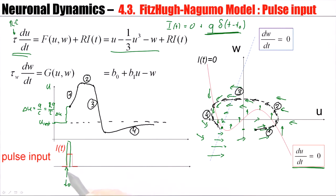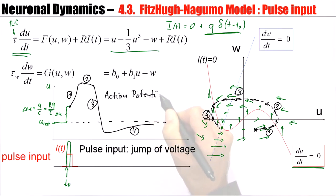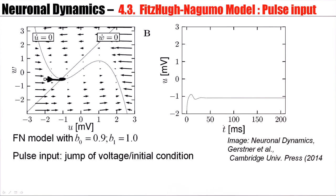So this little current pulse caused first a jump of the voltage to a new initial condition. And then from there on, we see a trajectory that corresponds to an action potential. This is the equivalent of an action potential in our two-dimensional neuron model. There's an upswing, there's a time when it stays close to the maximum, and there's a rapid downswing. And then it comes back from below to the resting potential.